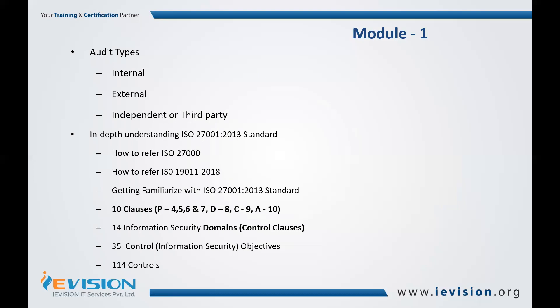The 14 domains include policies for information security, organizing information security, human resource security, asset management, physical security, cryptographic controls, supply chain security, and operations security, among others. Each domain may have one or multiple control objectives. To achieve those control objectives, there are 114 controls defined in ISO 27002.